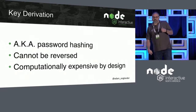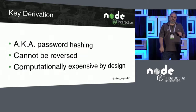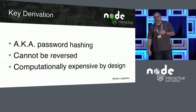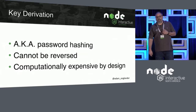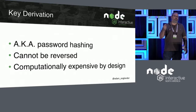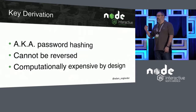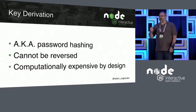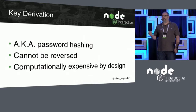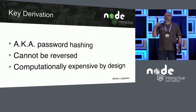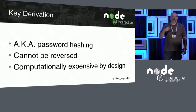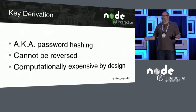Key derivation is what we call password hashing. It cannot be reversed, and it's computationally expensive by design. That's the important part — the important part of password hashing is that it's computationally expensive by design. If you're doing standard hashing, it's not expensive. To do an MD5 takes almost no time.